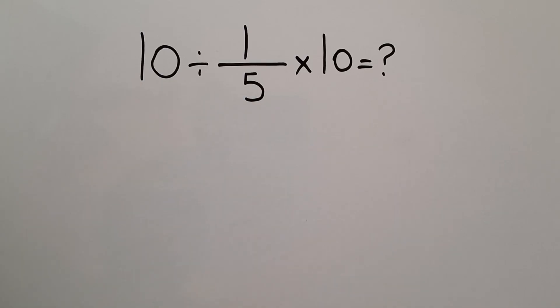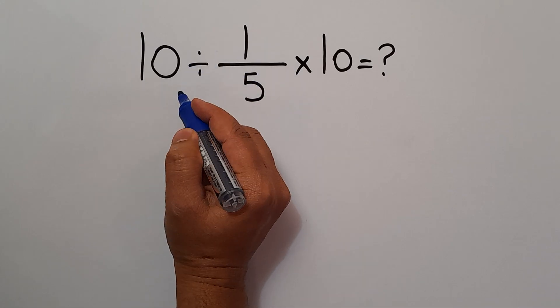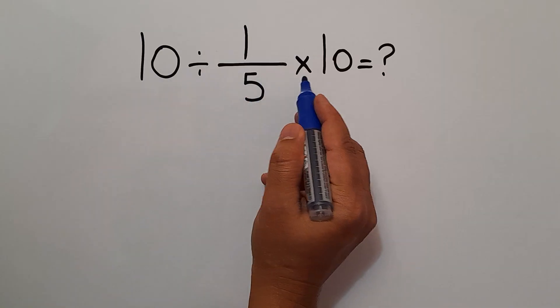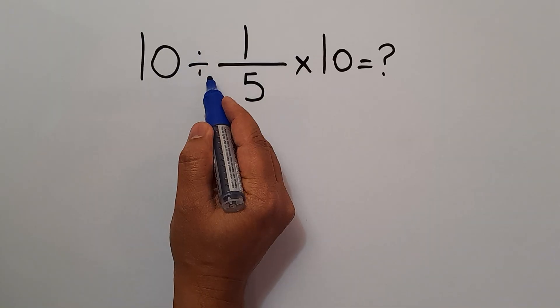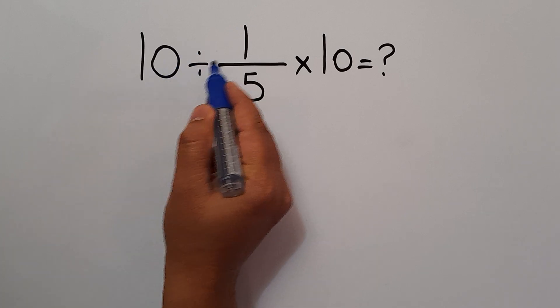Because according to the order of operations, multiplication and division have equal priority and we have to work from left to right. In this expression, first we see division, so first we have to handle this division: 10 divided by 1 over 5.